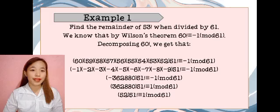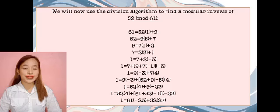To cancel and cancel the negative sign, 362880 times 51 factorial is identical to 1 mod 61. This simplifies to 52 times 51 factorial is identical to 1 mod 61. Next, we will now use the division algorithm to find a modular inverse of 52 mod 61.